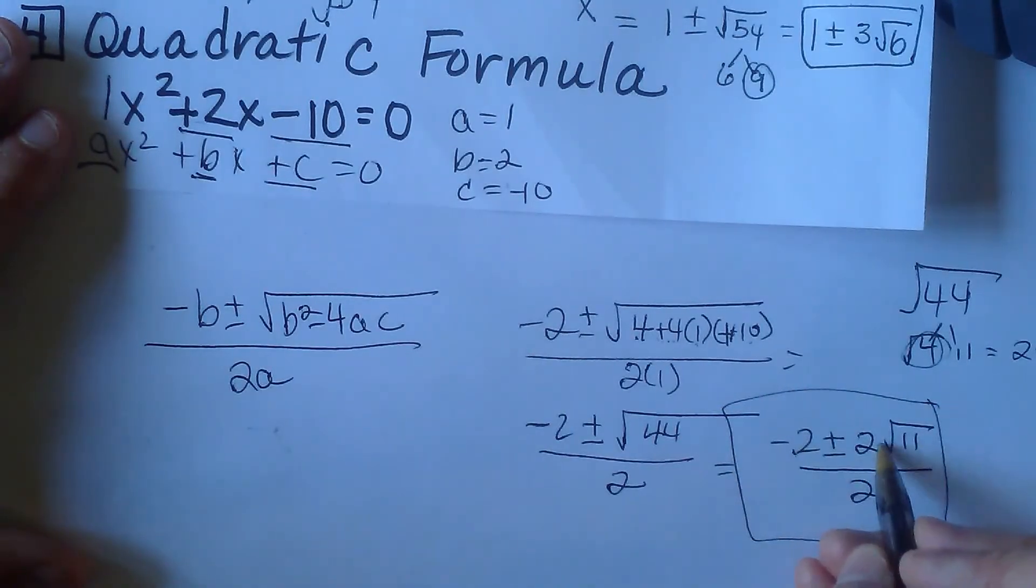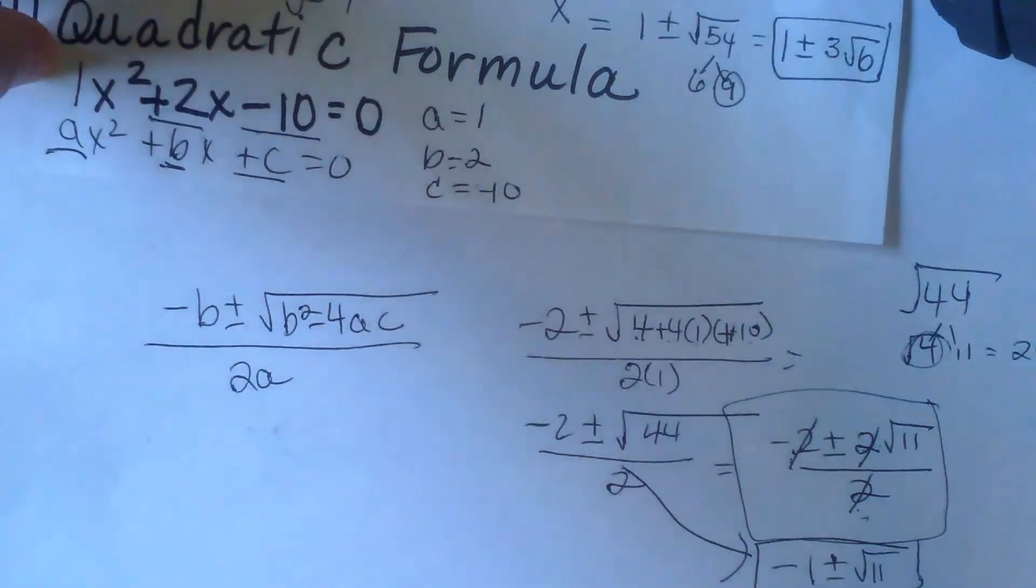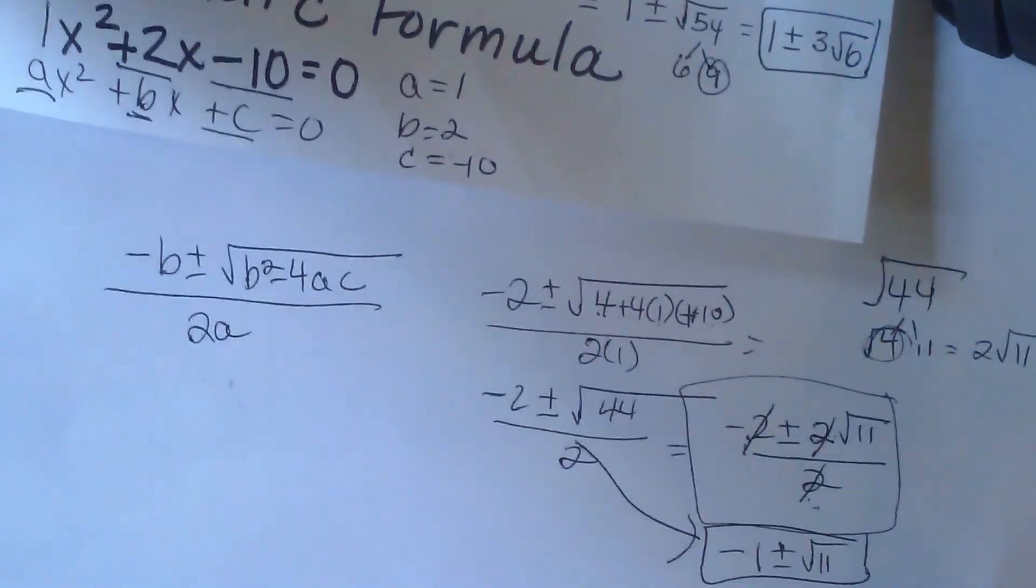This is the place where a lot of students make a mistake. You have 1, 2, 3 terms. All 3 of these are divisible by 2. So you need to divide all 3 by 2 to reduce it. So you get negative 1 plus or minus radical 11. And that is the final answer to the problem.